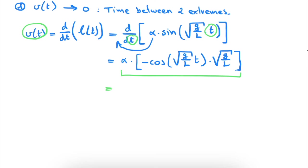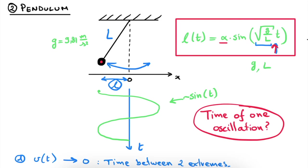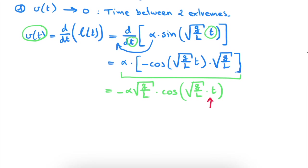We can rewrite this more clearly: we have minus alpha multiplied by the constant √(g/L), and then multiplied by the cosine of √(g/L) times t. The only changing part is the variable t. So whereas the displacement was a sine function of time, the velocity of our oscillator changes with the cosine of the same argument.